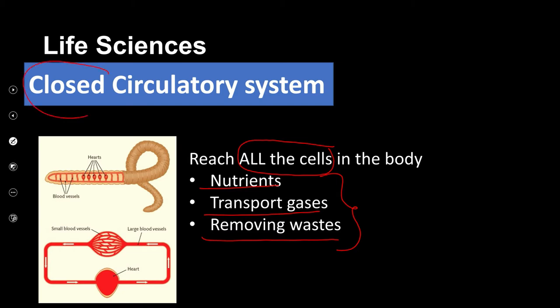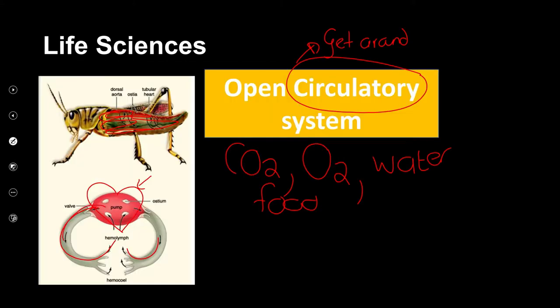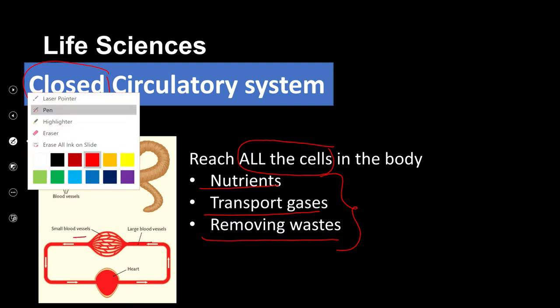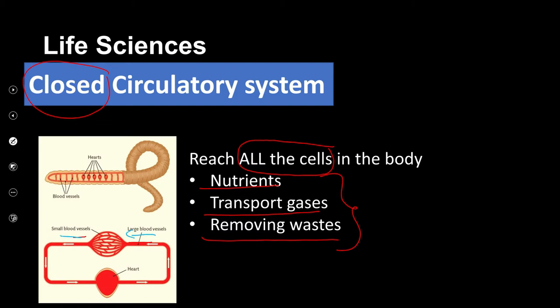What is called a closed circulatory system — what do we mean by closed? In an open system, it just opens out and everything mixes together. However, in a closed circulatory system, whatever it transports is going to be restricted to a series of blood vessels. There's a heart, and that heart is going to pump whatever it needs to transport, but it's going to stay in these vessels — it's going to get where it needs to go and come back again in these blood vessels.